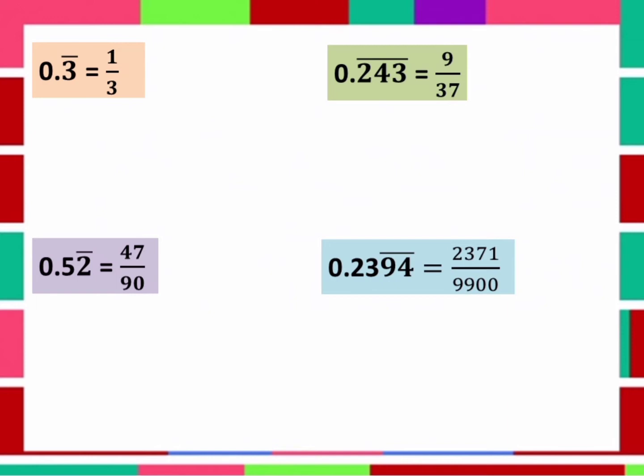0.3 with a bar. Always remember that the number that repeats is equal to the number of 9 in the denominator. Ulitin ko po, kung ilan yung number na nagre-repeat o nauulit, yun din ang number ng 9 na isusulat mo sa denominator. In this example, there is one digit that repeats, which is the 3. So we put 1, 9 in the denominator.